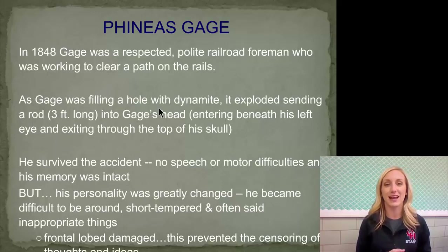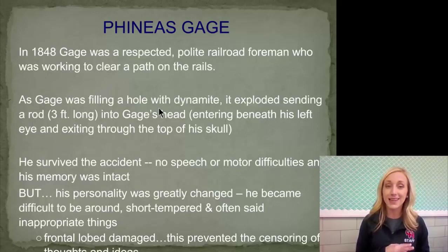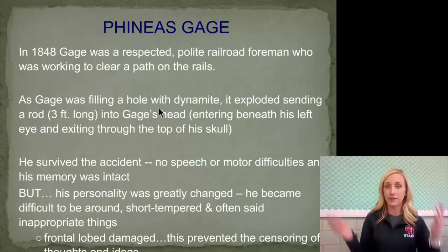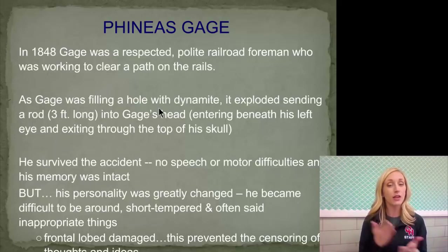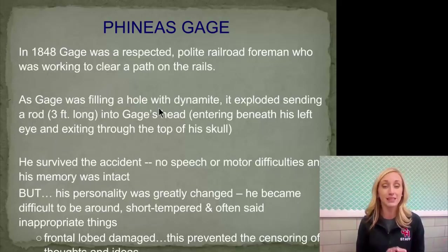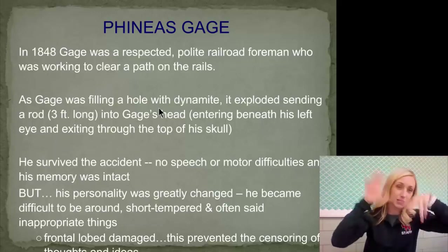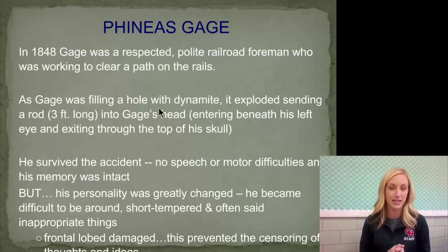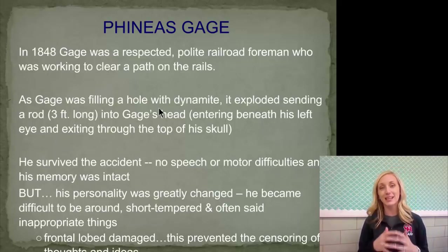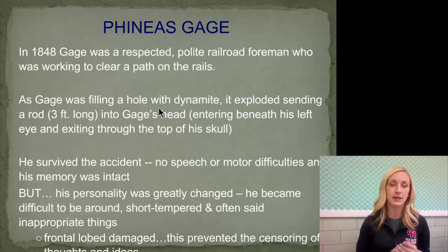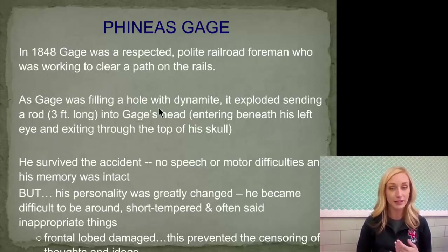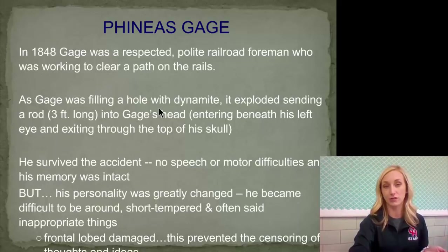But Gage's personality was hugely changed. He became difficult to be around, short-tempered, and often said inappropriate things. He would fly off the handle and curse a lot — he no longer had that frontal lobe filter on his amygdala. His frontal lobe damage prevented censoring of thoughts and ideas, and he could no longer plan for the future or show up to work on time. This is a very important case study to understand the function of the frontal lobe.